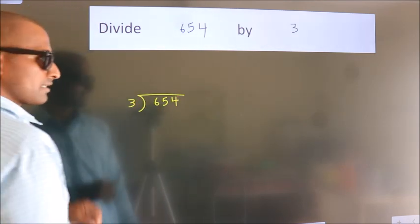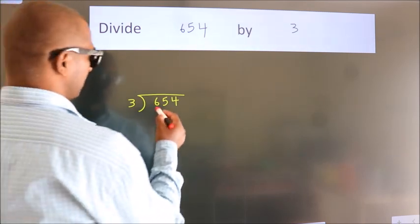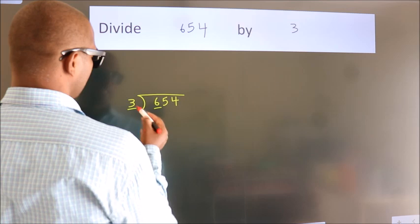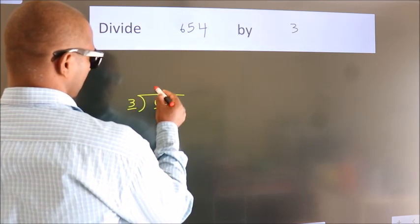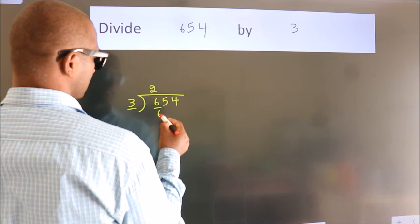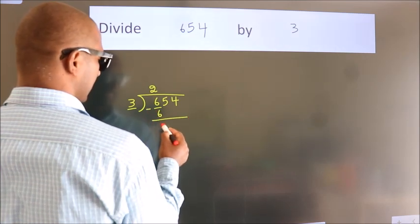This is your step 1. Next, here we have 6, here 3. When do we get 6? In the 3 table, 3 times 2 is 6. Now we subtract and get 0.